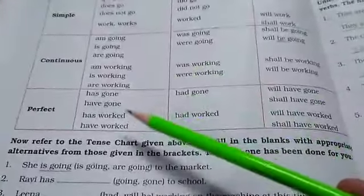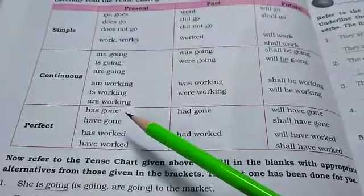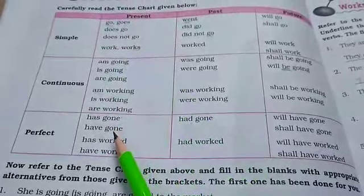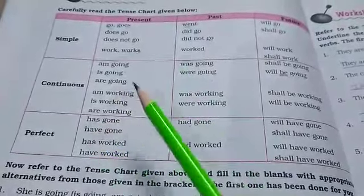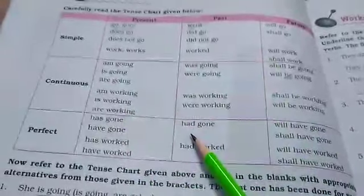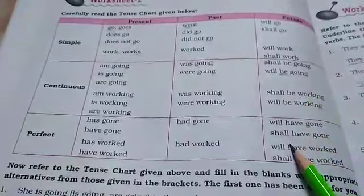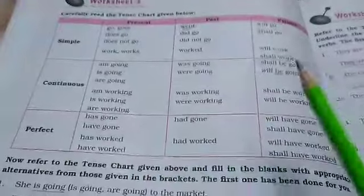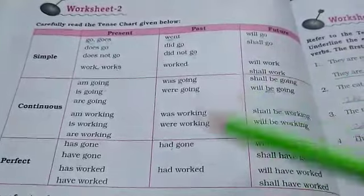Now, present perfect tense: when we use 'has' or 'have' in a sentence, we use the third form of the verb. 'Had' is used in past perfect tense, and 'will have' or 'shall have' is used in future perfect tense — all with the third form of the verb. You need to understand this structure to solve the worksheets.